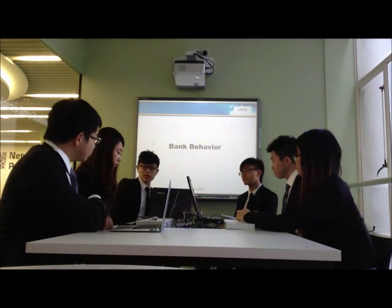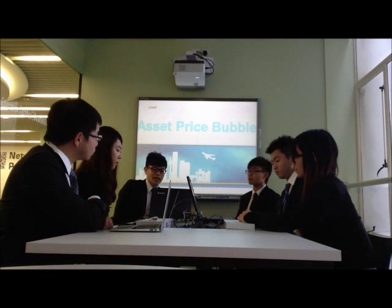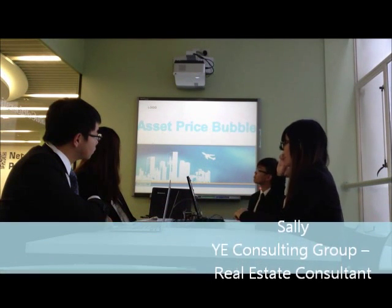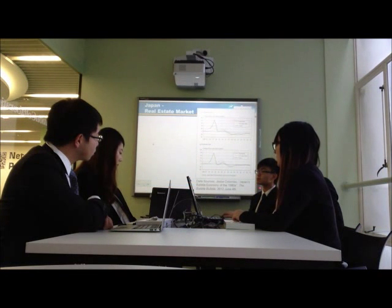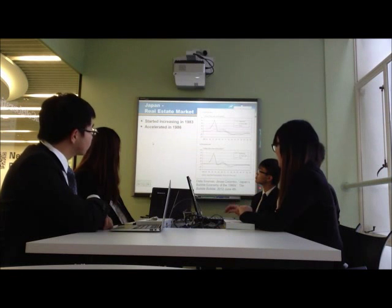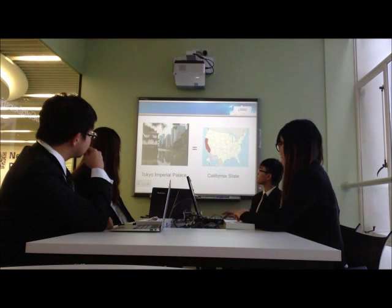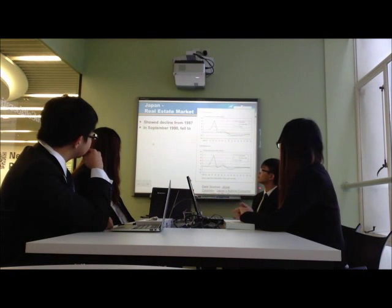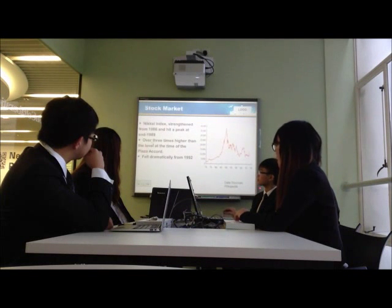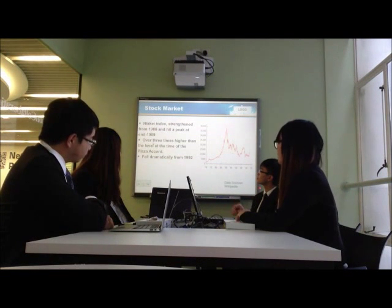This covers the misbehavior and zombie business issues in the banking sector. Another major similarity of both crises is the asset price bubble. In Japan, the real estate market started increasing in 1983, as shown in this graph, and it accelerated in 1986. At the peak point, the land underneath the Imperial Palace in Tokyo was worth as much as the entire state of California. However, the market showed decline from 1987 and then fell to about only 20% of the peak price the following year. As for the stock market, the Nikkei index hit a peak in 1989 and then fell dramatically from 1992.